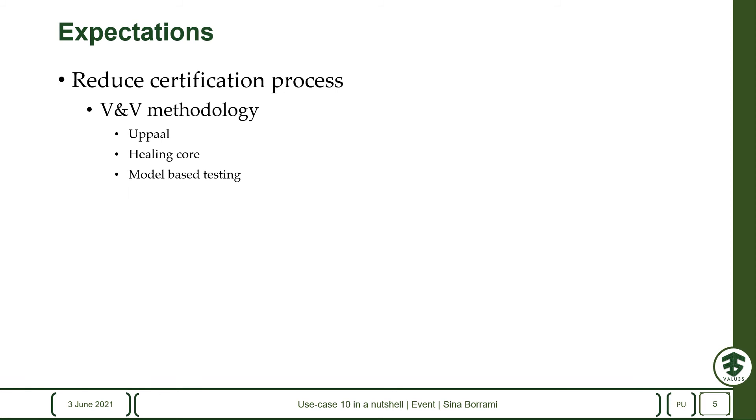For V&V methodology in our use case, we use UPPAAL model checker to model the system at a high level to check for liveness of safety properties and check for possible scenarios which could lead to deadlocks in the software.